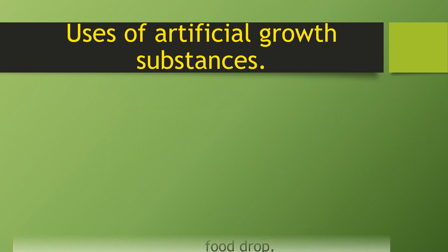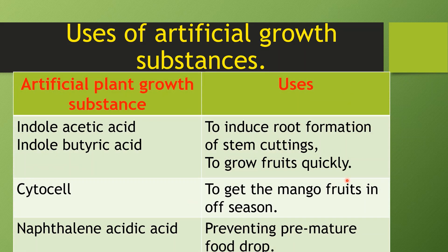Now you can see the natural plant growth substances. In this graph you can also see the artificial plant growth substances and their uses. Indole Acetic Acid and Indole Butyric Acid are used to induce root formation in stem cuttings and to grow fruits quickly. Cycocel is used to get mango fruits in the off season. Naphthalene Acetic Acid is used for preventing premature fruit drop.